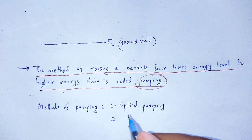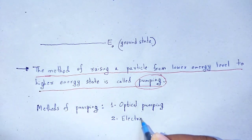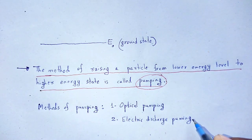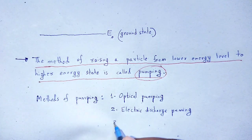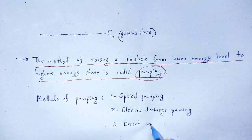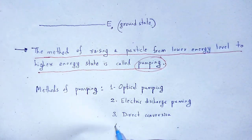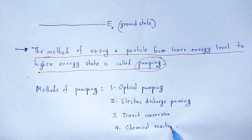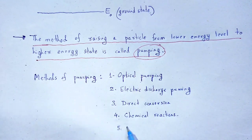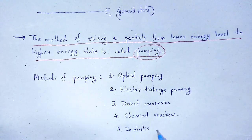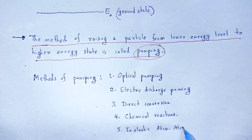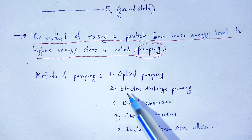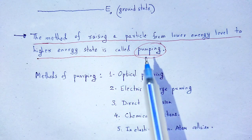Another method is electric discharge pumping, where electricity is used to provide energy to the ground state particles. These are the methods of pumping, and any one of these methods is used to pump the particles.